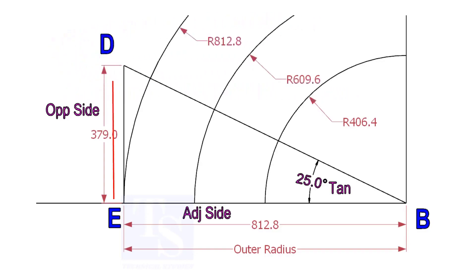Draw the line ED vertically and the slant line DB. I hope now you will be able to draw a line in any degree.